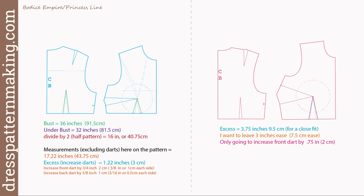For Kate I increased the front dart by 3/4 inch (2 cm) total — 3/8 inch each side — and the back dart by 3/8 inch (1 cm) — 3/16 inch each side. For me I have excess of 3¾ inches (9.5 cm); I'll only increase the front dart by 3/4 inch and not increase the back dart at all, leaving 3 inches (7.5 cm) of ease at the underbust. Because I have a 7-inch difference between bust and underbust, leaving 3 inches ease still gives good shaping.